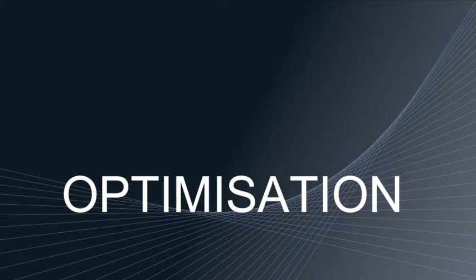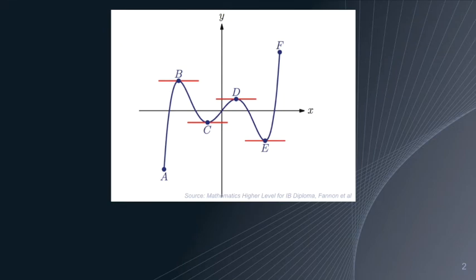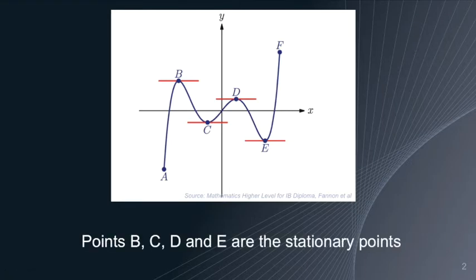Speaking about stationary points, let's try to recall them first. Looking at this graph of f(x), we can identify stationary points, and those are points B, C, D, and E. You can see the horizontal tangents at these points, so they are our stationary points.